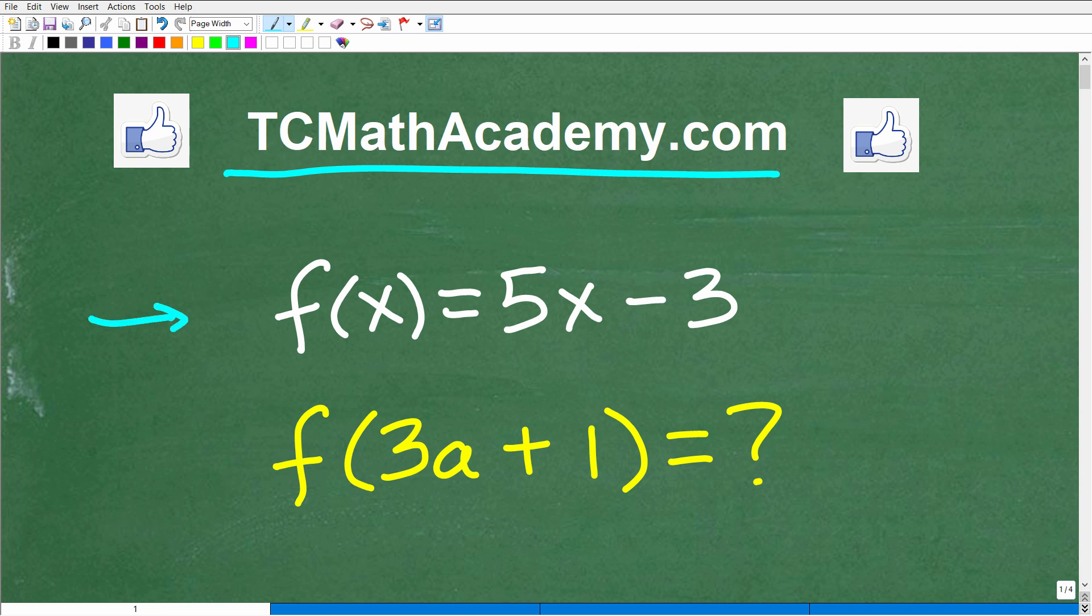So here we have a function f(x) is equal to 5x minus 3. I'd like you to evaluate this function for f of 3a plus 1. What is this equal to? So when we evaluate this function with 3a plus 1, what does this equal to? That is the question.